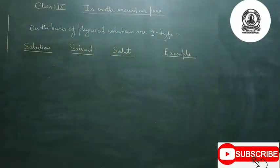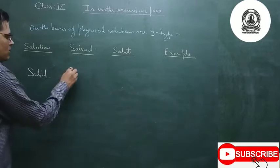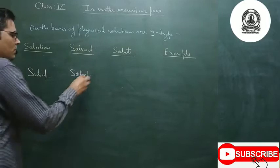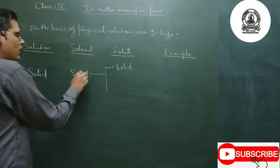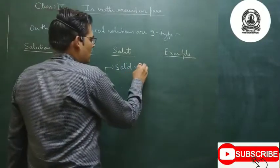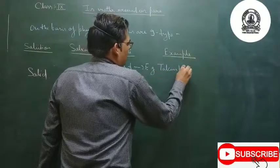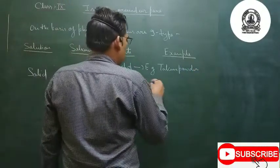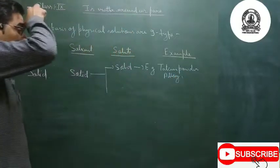First, let us study the solid solution. In this case, the solvent will be solid. The solute can first be solid, making a solid-in-solid type of solution. The example is talcum powder — talcum powder is an example of a solid-in-solid alloy and solid-in-solid type of solution.